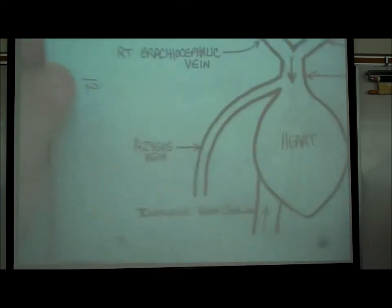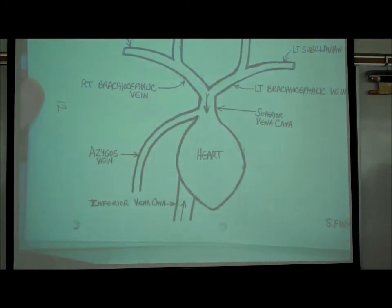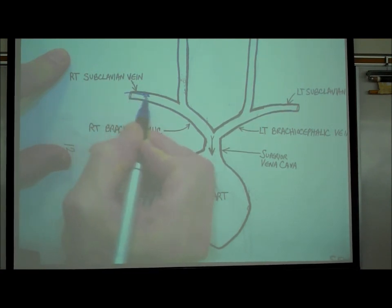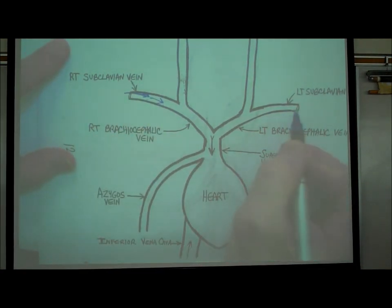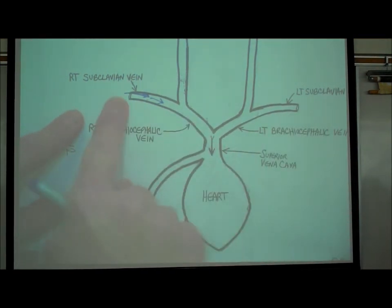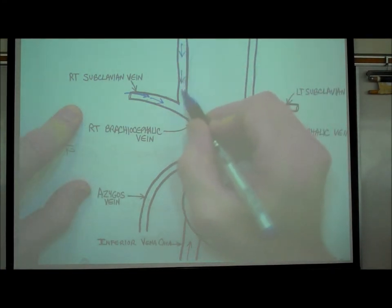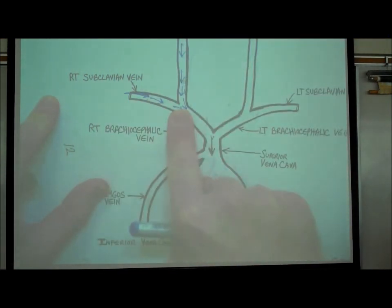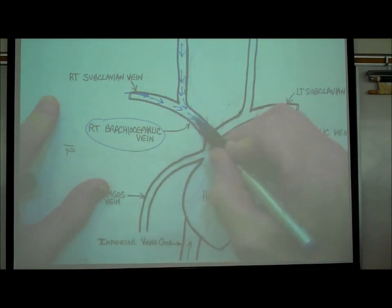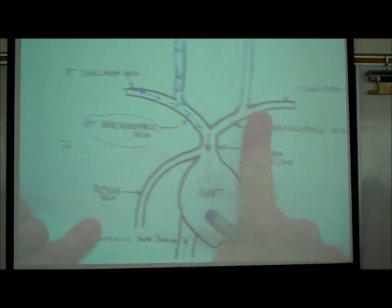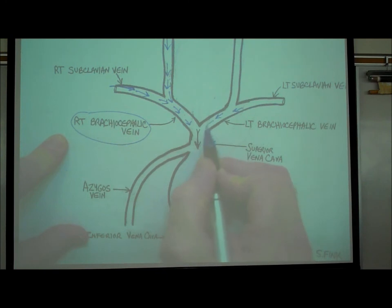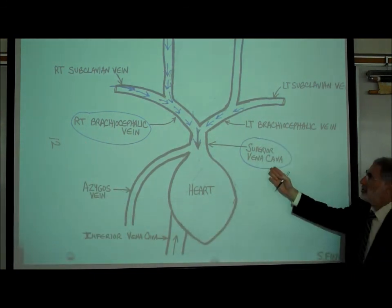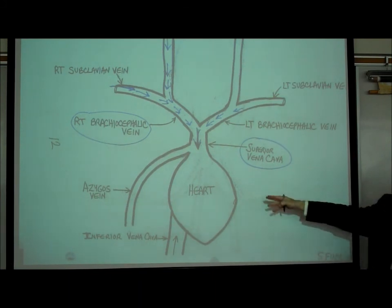Looking at page 12 of the handout: here's the subclavian vein bringing blood back to the heart. There's a right and left subclavian vein — focusing on the right. Here's the jugular vein bringing blood from the head. Where they join, the vein from the head joins the vein from the arm forming the brachiocephalic vein. The same happens on the left side. The right and left brachiocephalic veins join to form the superior vena cava, which brings blood from the upper body — head and arms — to the right atrium.